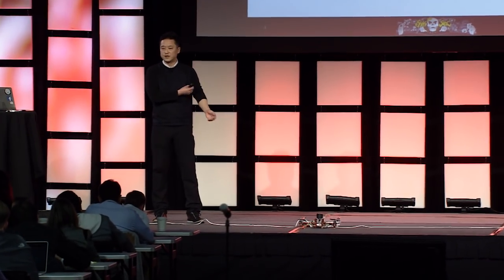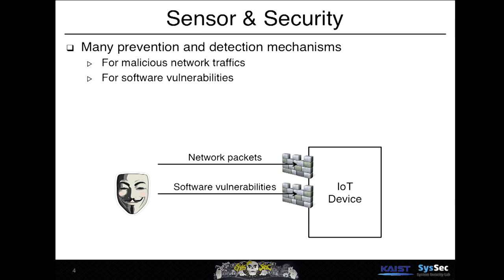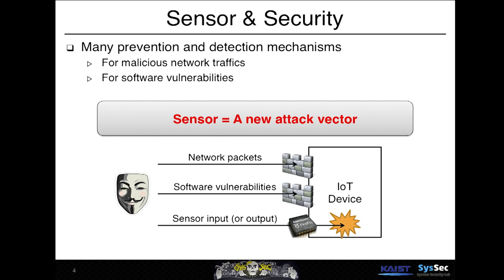In previous talks, we have seen that there are many problems in IoT. Network attacks and software vulnerabilities can cause serious incidents in IoT devices. However, at least we know how to handle those problems and what detection and prevention mechanisms exist. However, IoT devices blindly trust sensing inputs, and therefore there is no good defense against malicious sensing inputs.